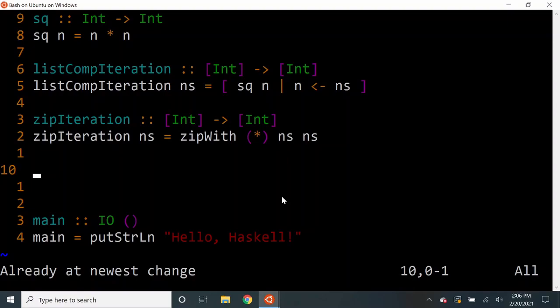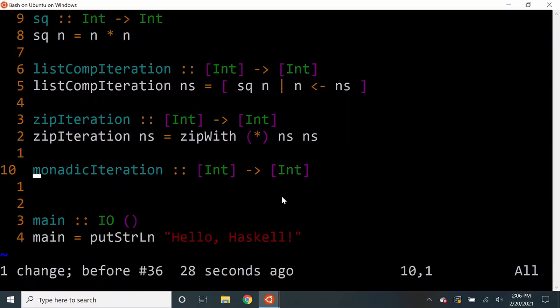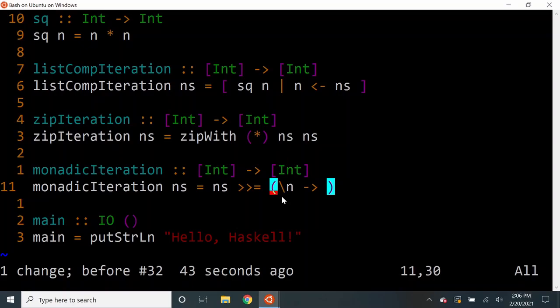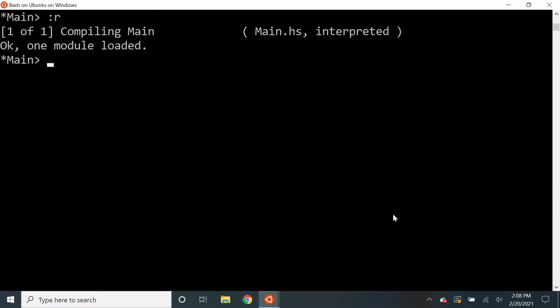To use this approach in our problem let's call our function monadic iteration. We take the input list and bind it to a lambda function which takes each element of the list, squares it and wraps it back into a list to preserve the monadic context. The implementation of bind operation on lists will take care of mapping this function over all the values of the input list and concatenating the resulting values into a flattened list. Let's check if our function compiles. And it does. Let's test with our usual input and we can see that we still get the correct result.